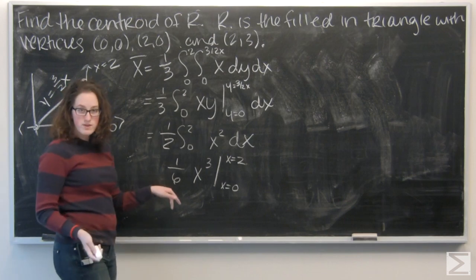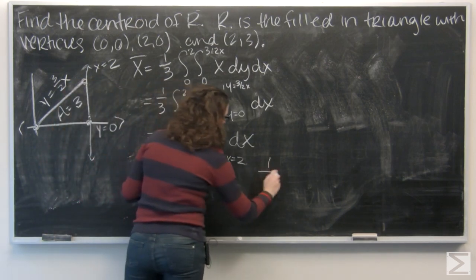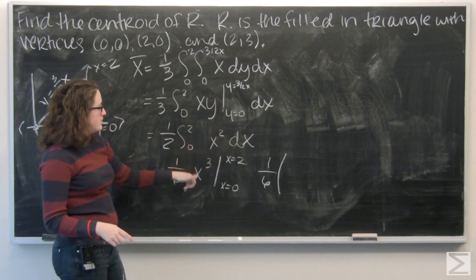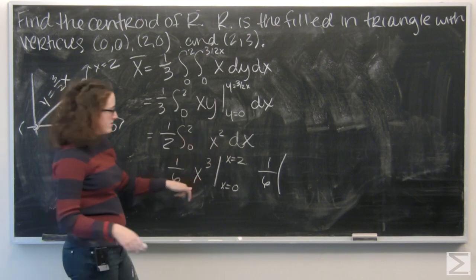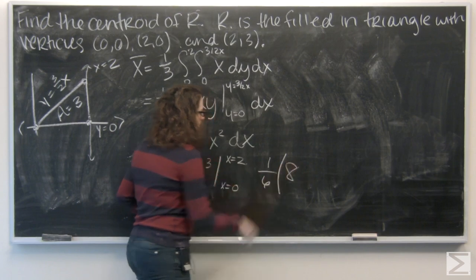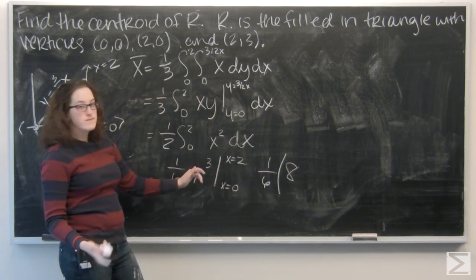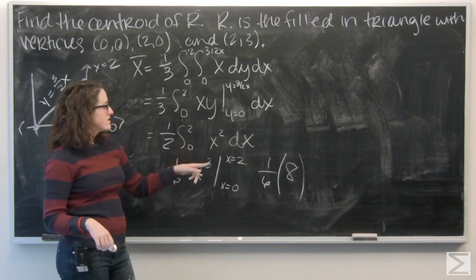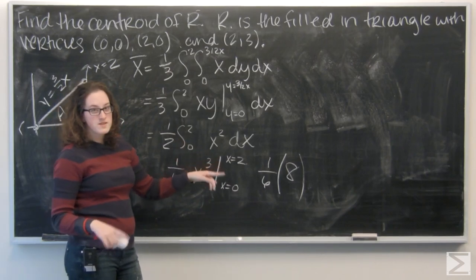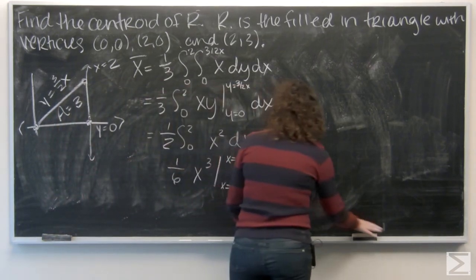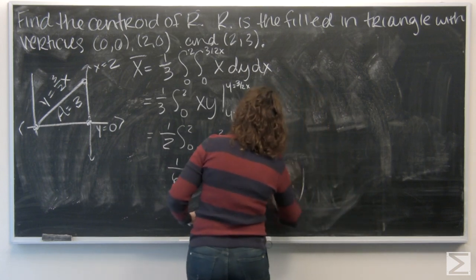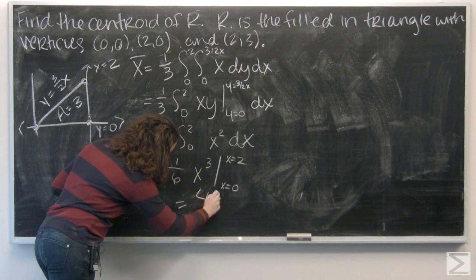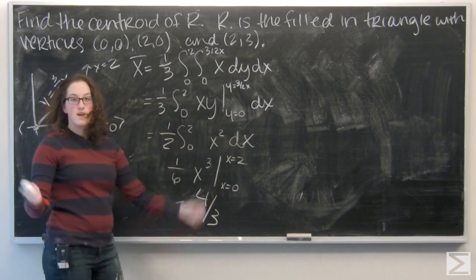Alright. I know this 1 sixth is going to tag along. Let's plug in 2. 2 cubed gives me 8. And 0 cubed gives me 0. So, I'm looking at 8 over 6 or 4 thirds. Halfway there.